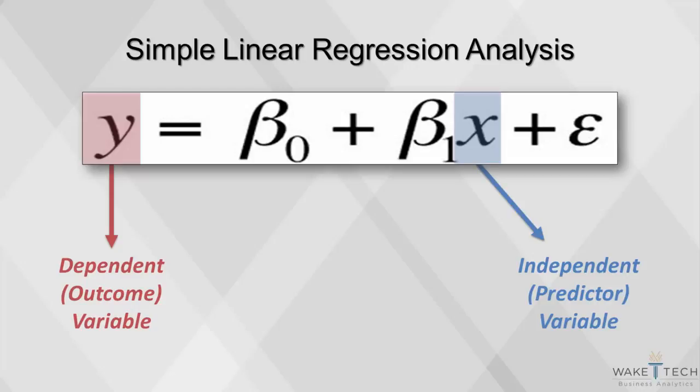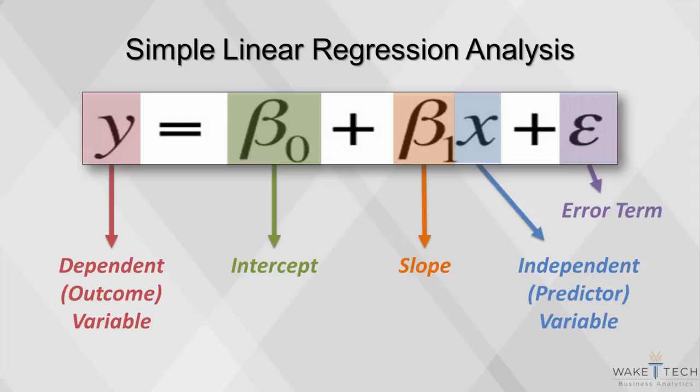We use this information to estimate the value of the intercept, beta 0, and the slope, beta 1, that relate to x and y. Since the linear relationship is not exact, we include an error term in the model, epsilon.